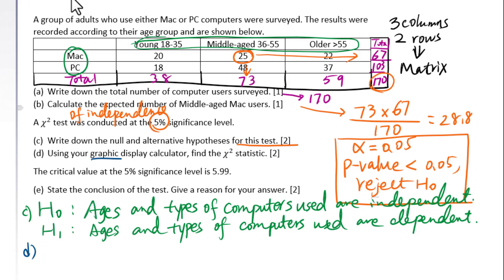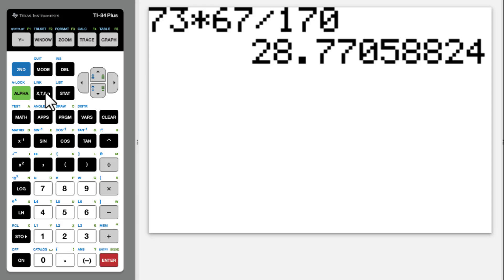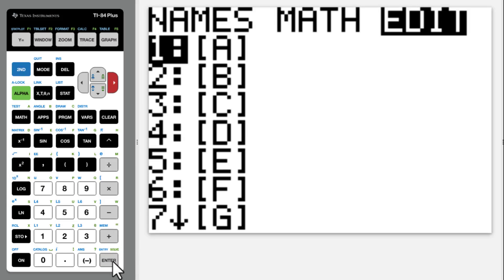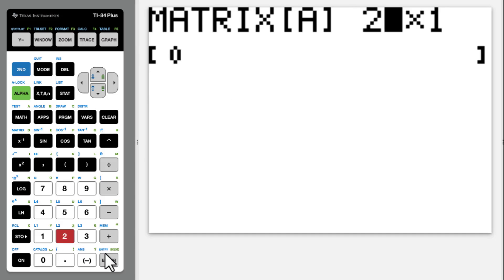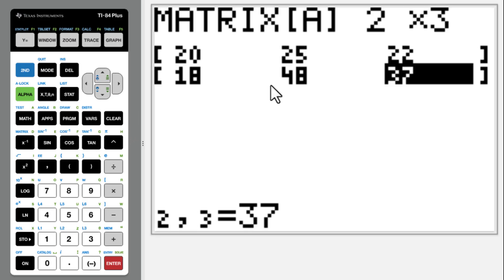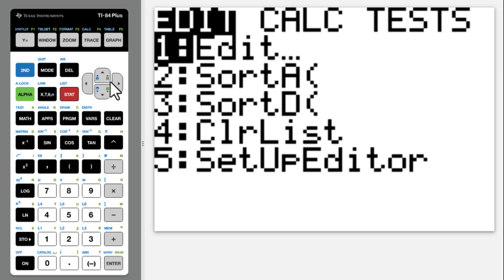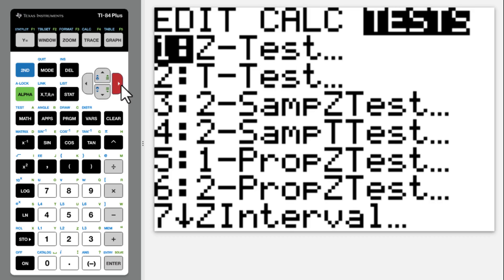Let's go to D. Using your graphic display calculator find the chi-square statistic. First of all we will put data into matrix. 2nd x to the negative 1st power, edit. We have 2 rows, 3 columns. After you put the data into matrix, set again, go to tests.